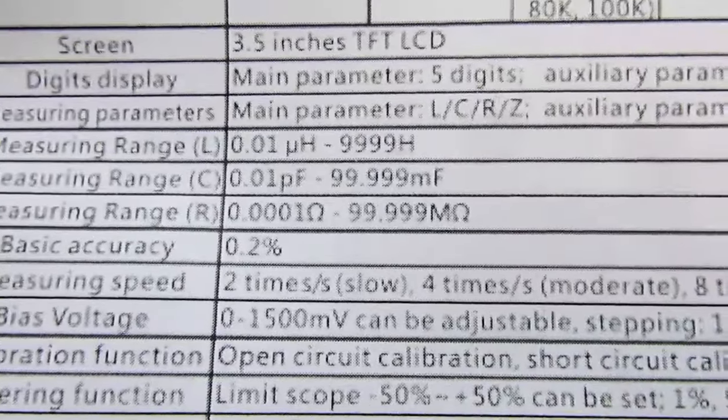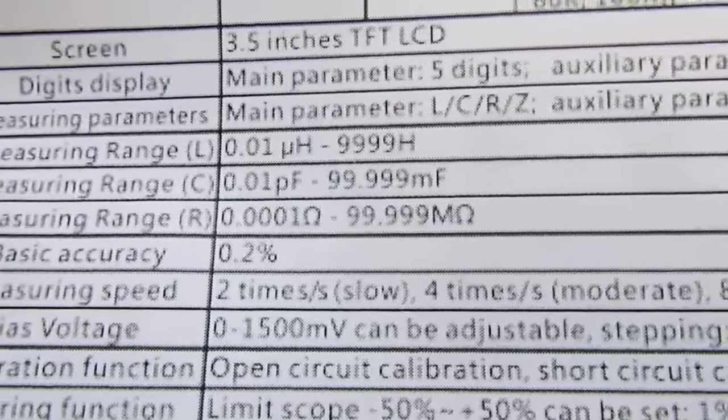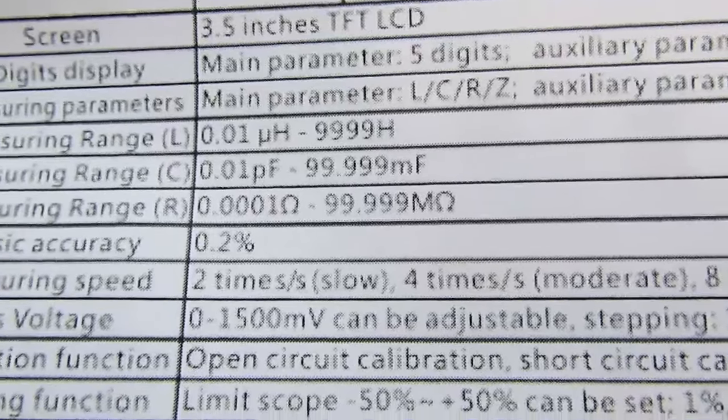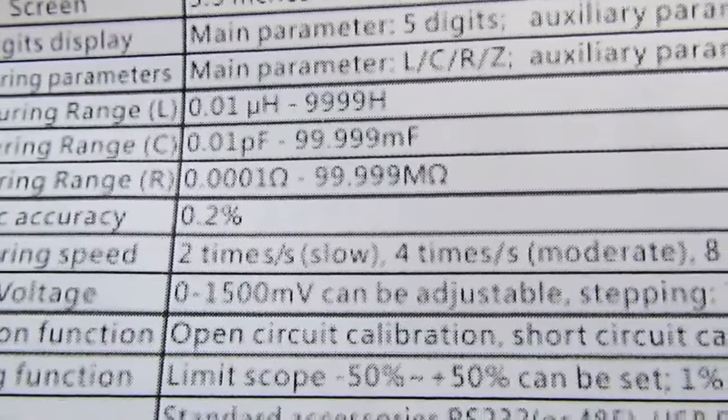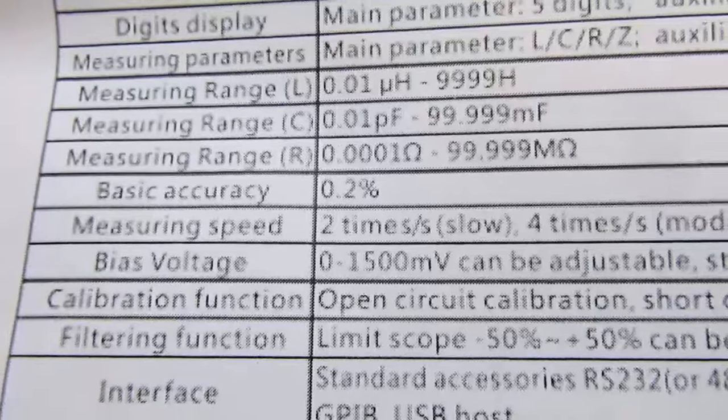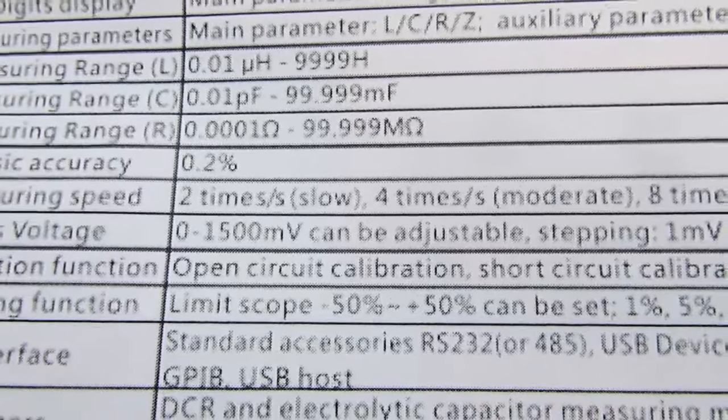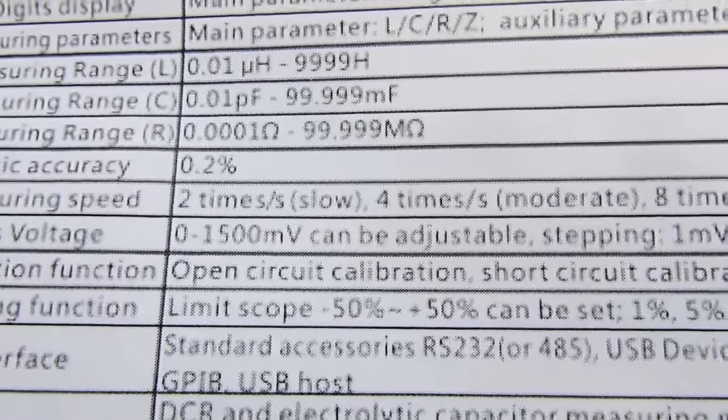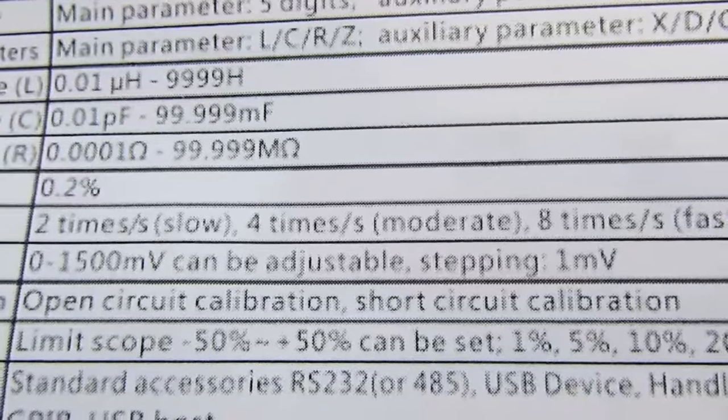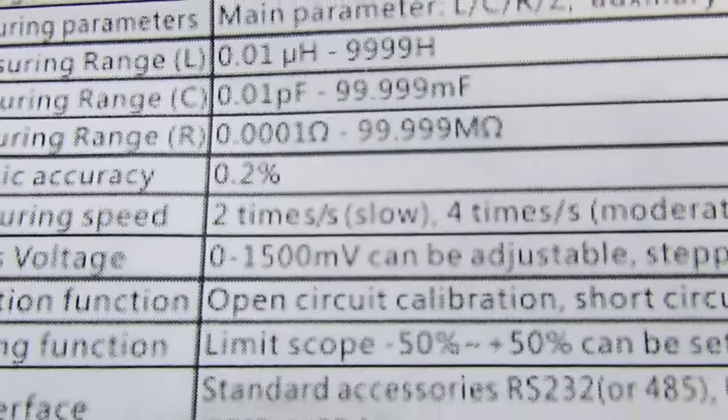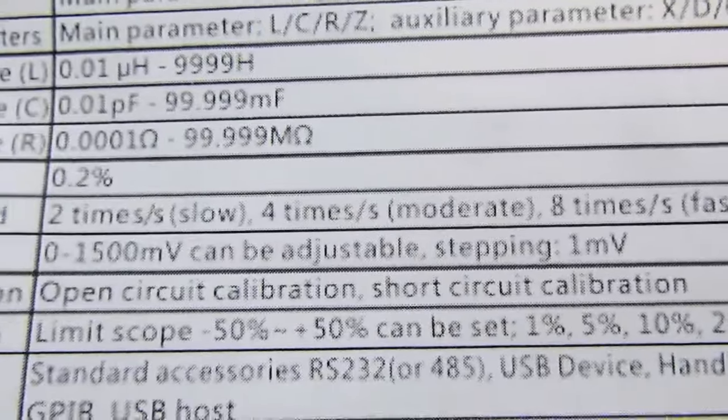Measuring range: 0.01 microhenries to 9999 henries, 0.01 picofarads to 99.999 millifarads, and 0.0001 ohms to 99.999 megaohms. Basic accuracy: 0.2%. Measuring speed: 2 times per second, 4 times per second, or 8 times per second - slow, medium, and fast.